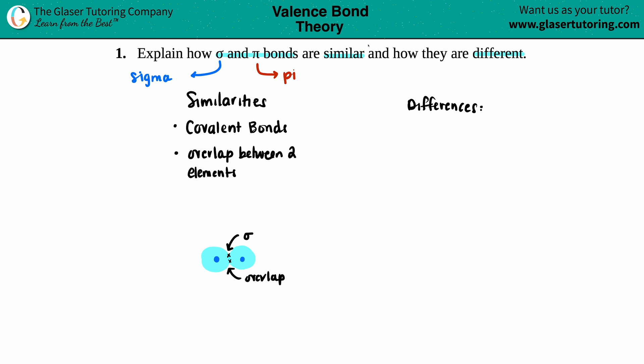And also an orbital, whether it's a sigma bond or a pi bond, you could only have a max of two electrons. So two electrons are shared in both the sigma and pi bond.